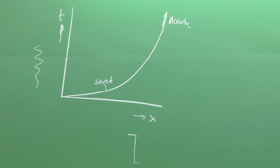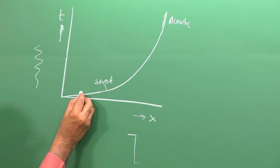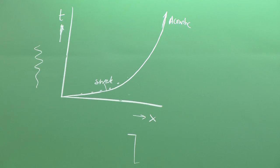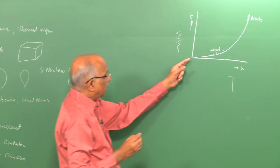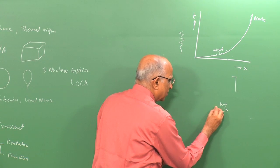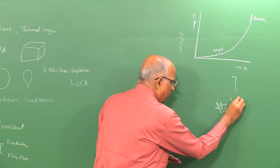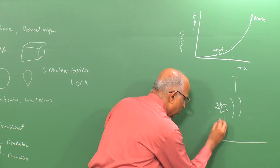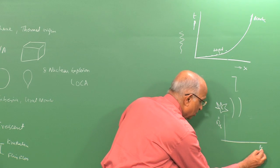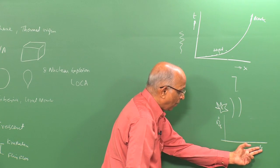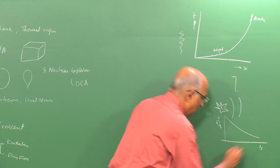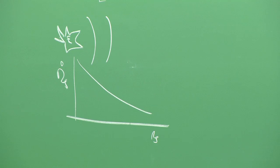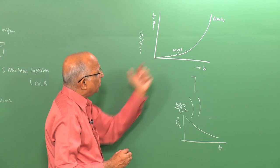We are interested in finding out what overpressure is generated at different points. The problem is complex because the lead shock is continually decaying — the velocity R_s-dot goes as a constant times R_s to the power −3/2. If we follow the path of particles processed by the shock in a Lagrangian framework, the shock has decayed in strength by the time it reaches farther particles.